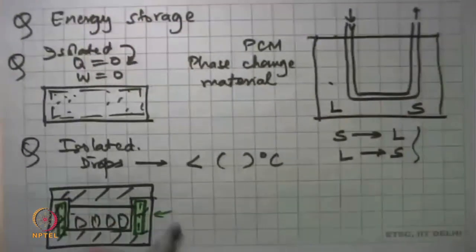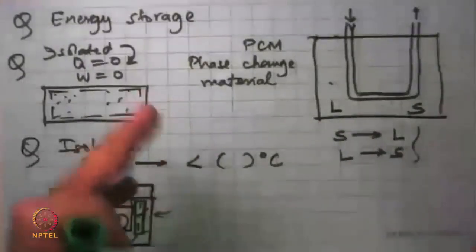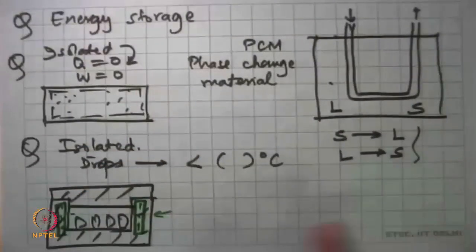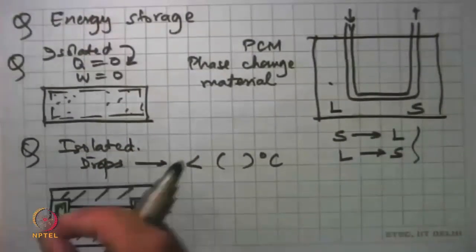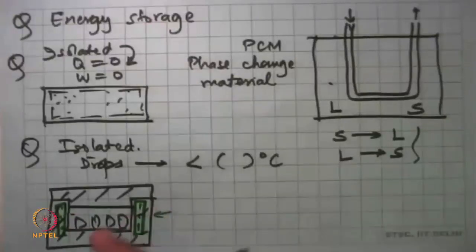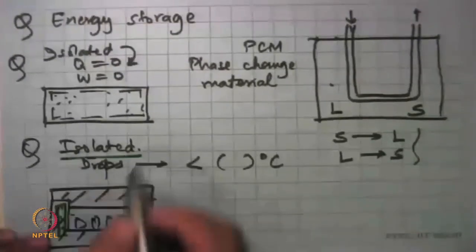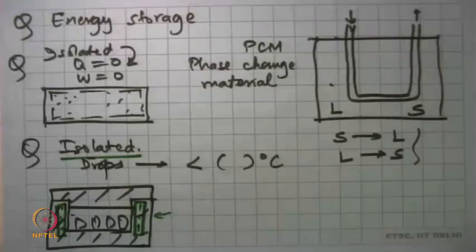That way, by the time we get to the remotest town the vaccine is still preserved and the whole program becomes very effective. That is an example where an isolated system is very very important.